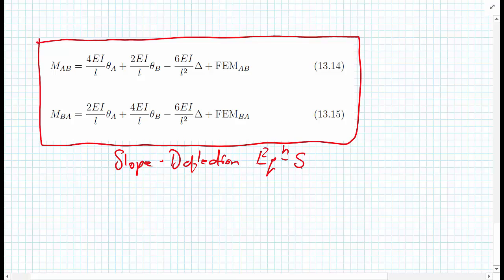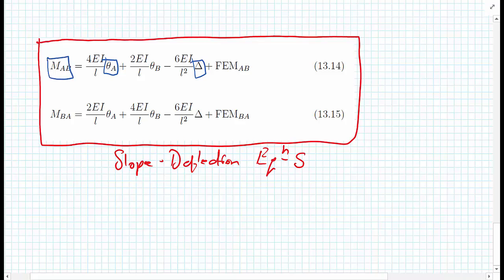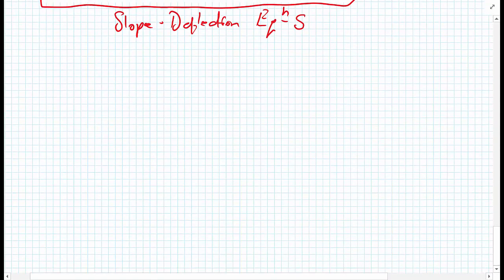In writing these equations, the notation is MAB — the moment at A looking towards B — and MBA — the moment at B looking towards A. Armed with these equations, in the next video we'll use them to analyse an indeterminate beam by solving first for the member end rotations or deflections to get the member end moments, and then obtaining the full bending moment diagram using what we know about simply supported structures. We'll also discuss fixed-end moments further before the example.